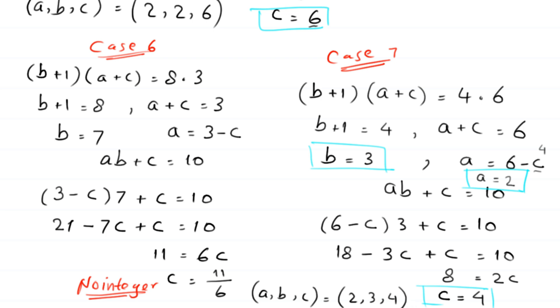From case 8, we get no integer solutions. The final solutions are (a, b, c) = (14, 0, 10), (2, 2, 6), and (2, 3, 4).